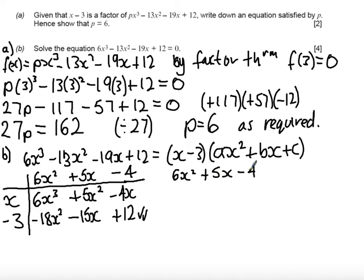Now 6 times minus 4 is minus 24. Factors of minus 24, which would give me plus 5, would be plus 8 times minus 3.